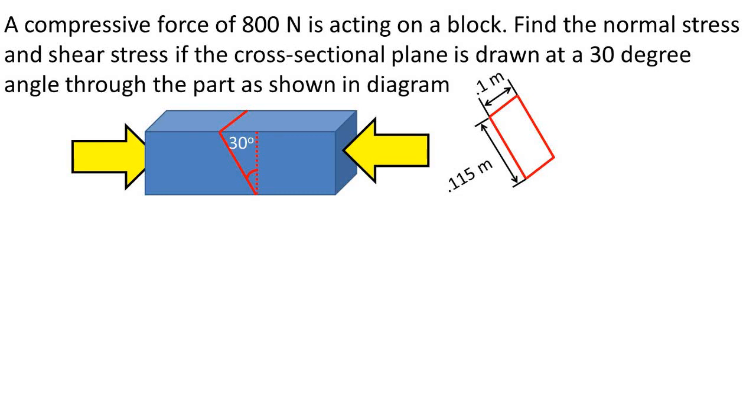In this video, we have a compressive force of 800 N acting on a block. We need to find the normal stress and shear stress in a cross-sectional plane that is drawn at a 30 degree angle through the block as shown in the diagram. The plane has a width of 0.1 meters and a length of 0.115 meters.